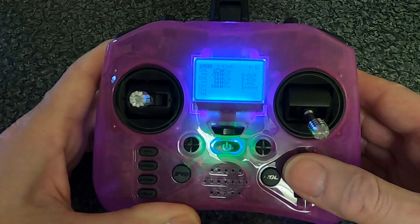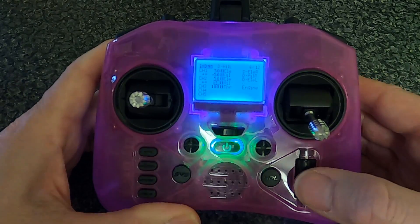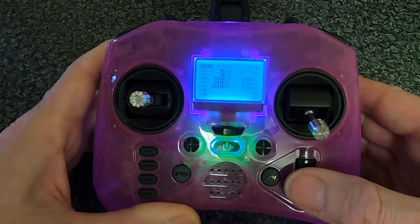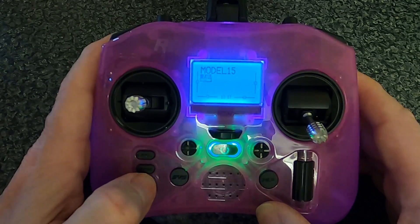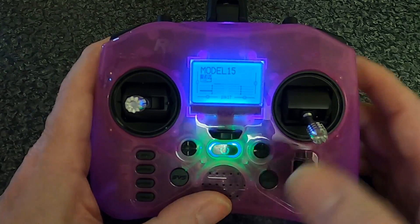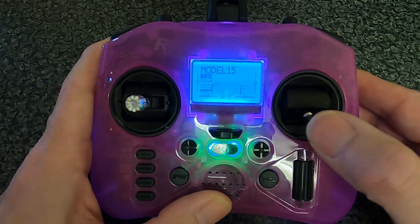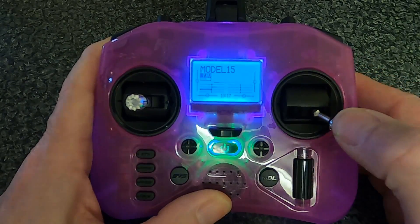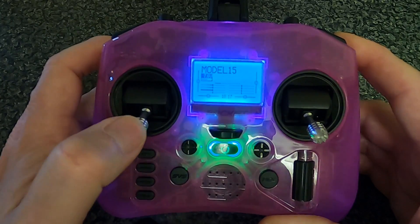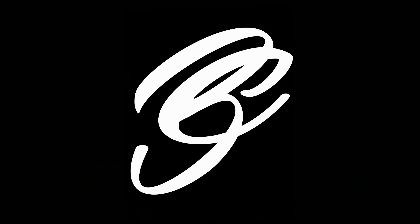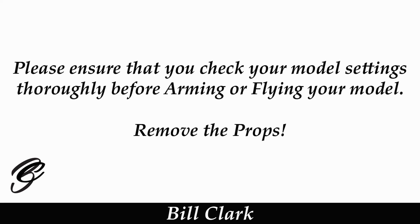You can see channel one and channel two have been set up to be a delta wing. If we come back out and go across until we get to our channel monitor where we can see our channels moving, you'll see that channel one and channel two are now working as the ailerons but also working as the elevators.